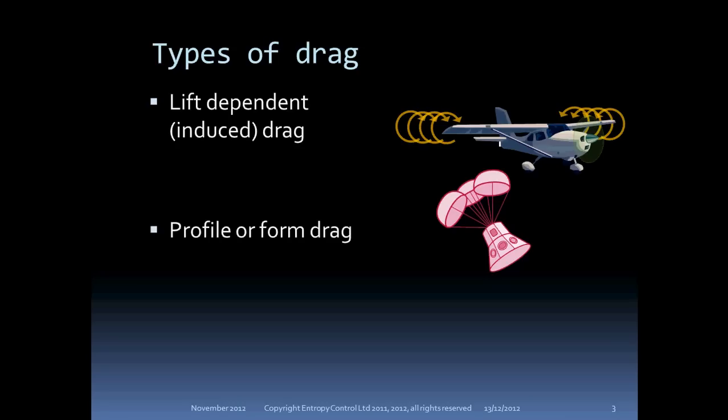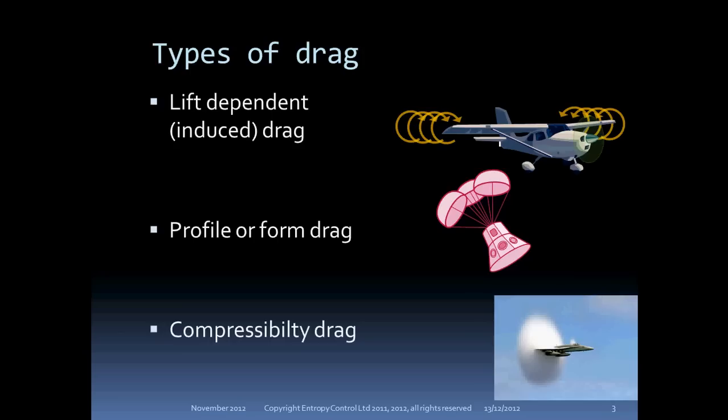Profile or form drag, also called parasitic drag, is the familiar drag that is always there on any object moving through a fluid. It also represents energy lost, in this case to skin friction and in the vortices left behind bluff bodies. Compressibility drag is the energy lost in shockwave systems that start to become important close to the speed of sound.